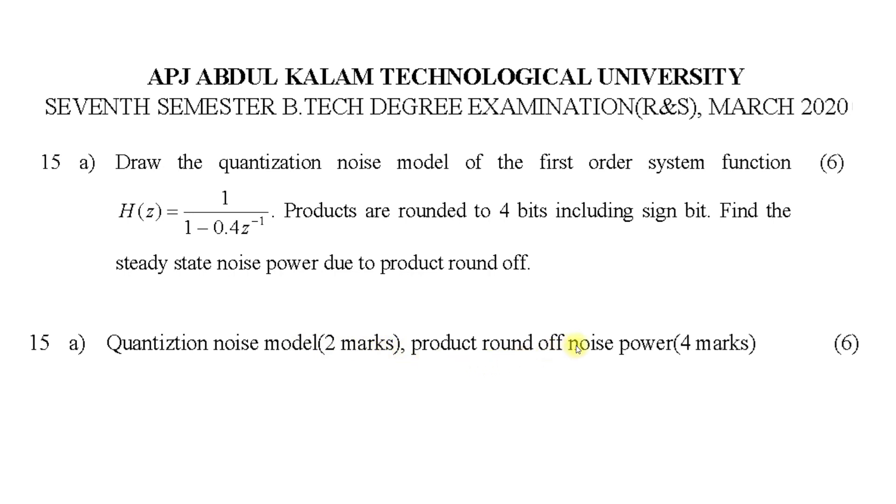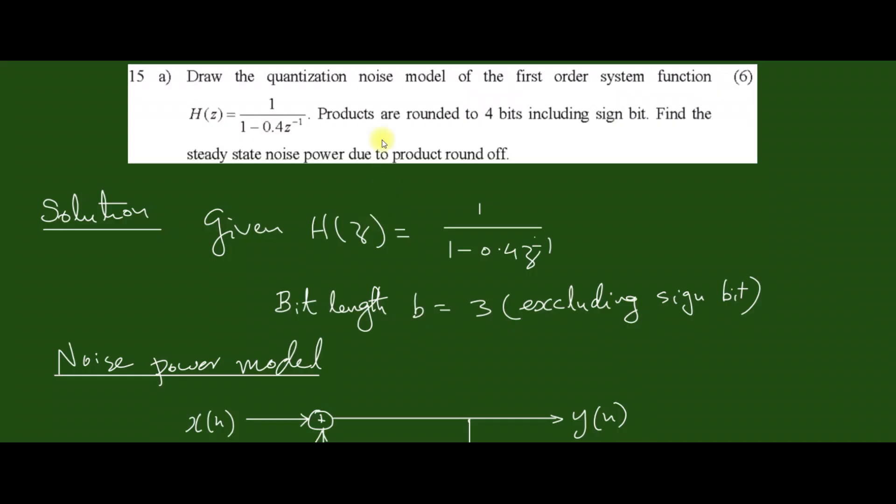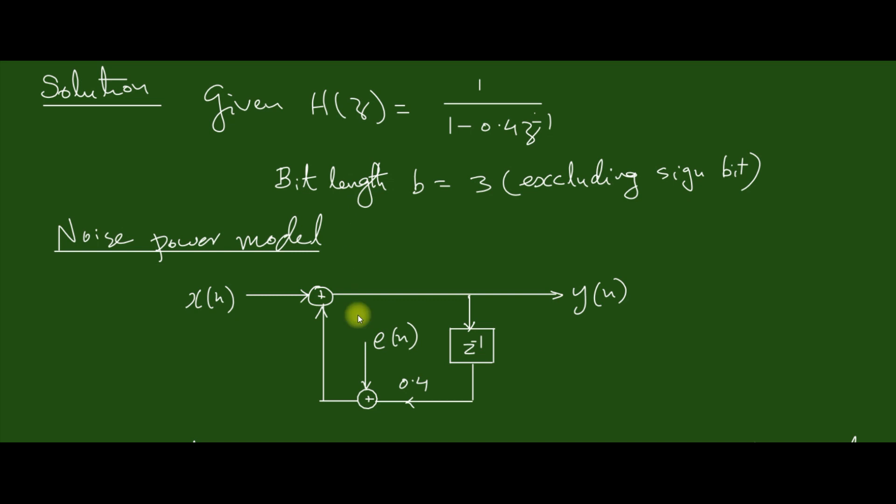Quantization noise model, two marks. Product round off noise power, four marks. So let us solve this problem. The problem given H(z) is equal to this one. Now bit length b is equal to 3 excluding the sign bit, so including sign bit it is 4.